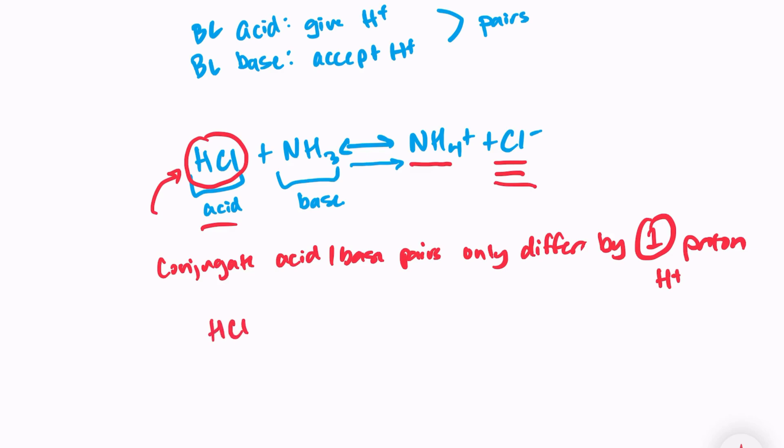HCl is our acid, and Cl- is the conjugate base. And then if we look at NH3, we can see that it differs from NH4+ by only one proton. So NH3 is our base, and NH4+ is our conjugate acid.